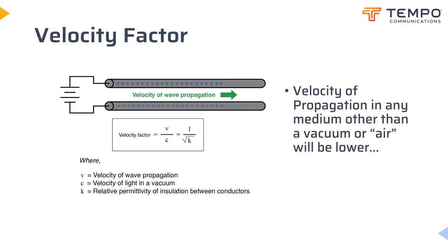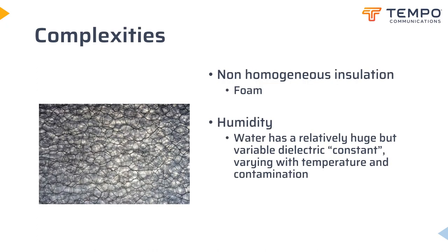Whilst the equation for VOP factor appears simple, in the real world there are all sorts of complexities that can change the actual VOP measured. Many low-loss cables utilize foam insulation or extruded spacers. Whilst in manufacturing they aim to have a constant density, even small variations will result in a corresponding change of velocity factor and characteristic impedance. Water contamination can give very pronounced changes in both impedance and slowing of velocity of propagation.